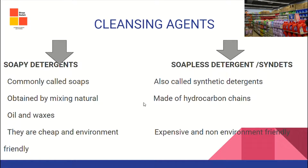Cleansing agents include soapy detergents and soapless detergents, also called syndets. Soapy detergents, commonly called soaps, are obtained by mixing natural oils and waxes — they are cheap and environmentally friendly. Soapless detergents, also called synthetic detergents, are made up of hydrocarbon chains — they are expensive and non-environment friendly.